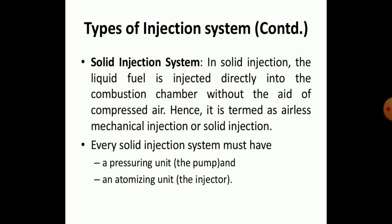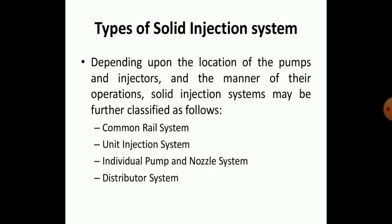Another type is the solid injection system, in which liquid fuel is injected directly into the combustion chamber without the aid of compressed air — hence it is termed airless mechanical injection or solid injection. Every solid injection system must have a pressure unit and an atomizing unit. Depending upon the location of the pump and injectors, the solid injection system may be further classified into the common rail system, unit injection system, individual pump system, and distribution system.